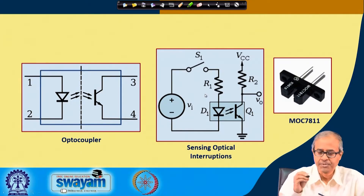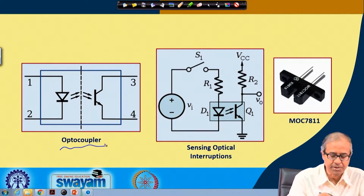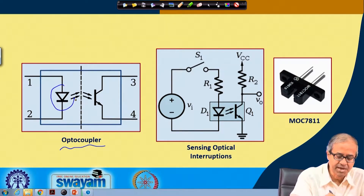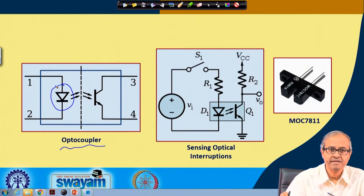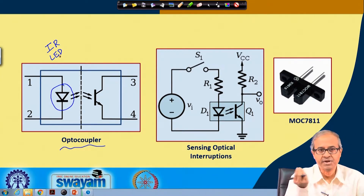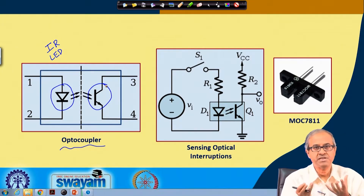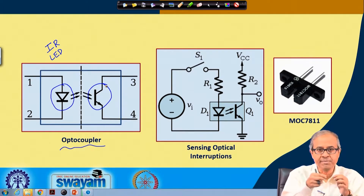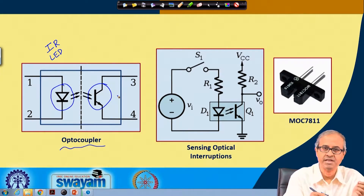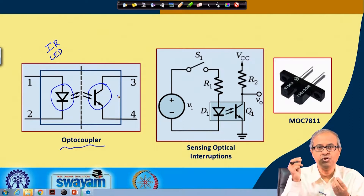An optocoupler consists of two parts: one is a light source. In the circuit we are using, this light source is an infrared LED — it emits light in the infrared frequency band. On the other side there is a photo transistor, which is a transistor with no base connection; instead, the base is replaced by an optical mechanism.